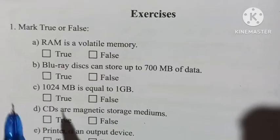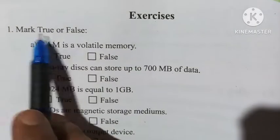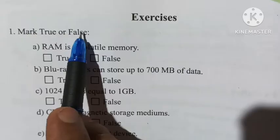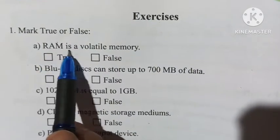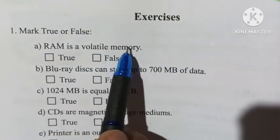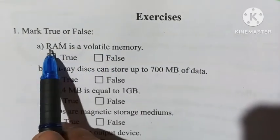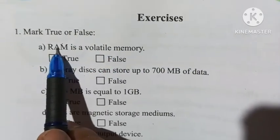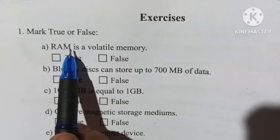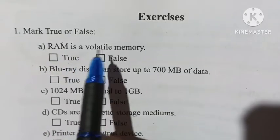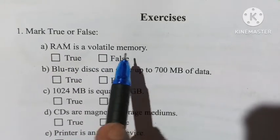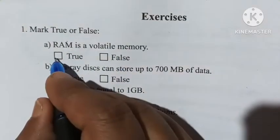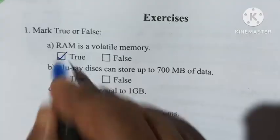Our first question is: Mark true or false. RAM is a volatile memory. RAM means Random Access Memory, so it is a volatile memory. Therefore, it is true.